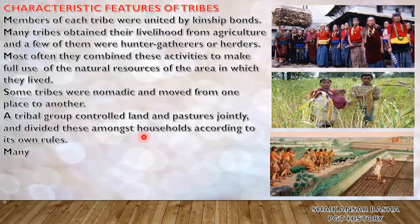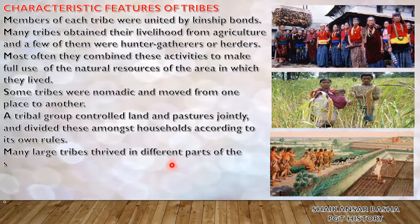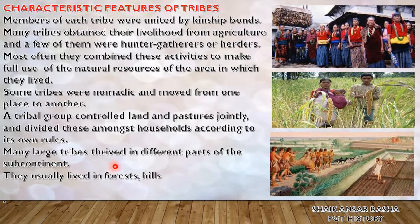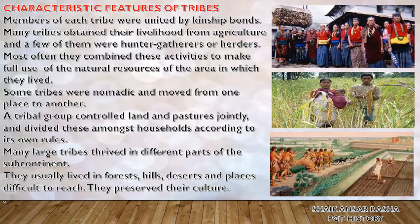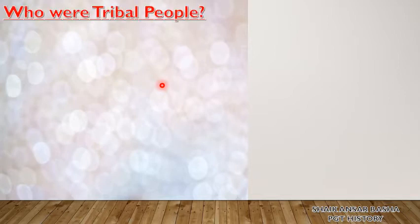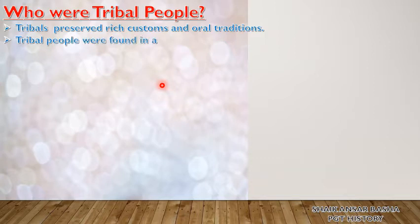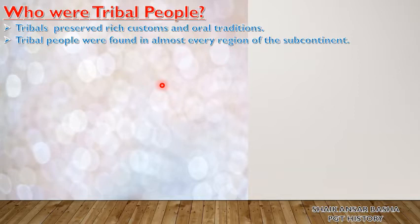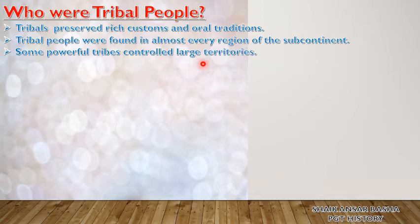Many larger tribes thrived in different parts of the subcontinent — India, Pakistan, Nepal, Bhutan. They usually lived in forests, hills, deserts and places difficult to reach. Tribal people preserved rich customs and oral traditions. They were found in almost every part of the subcontinent — India, Pakistan, Afghanistan, Bangladesh, Bhutan and Nepal. Some powerful tribal groups controlled large territories in our country.